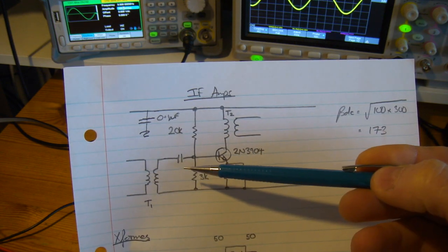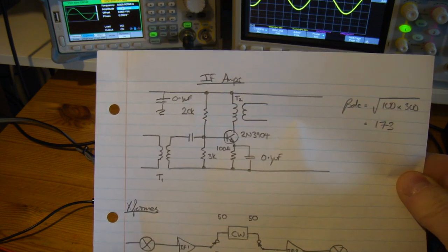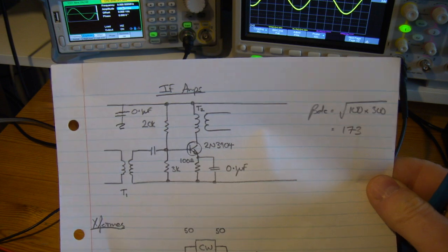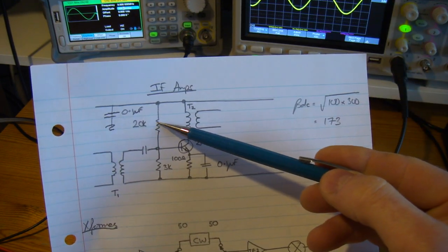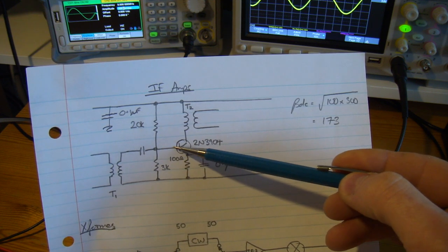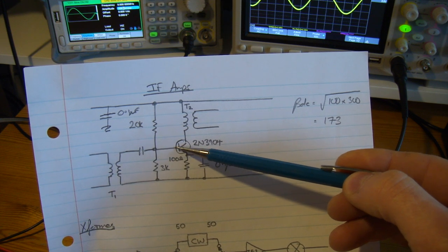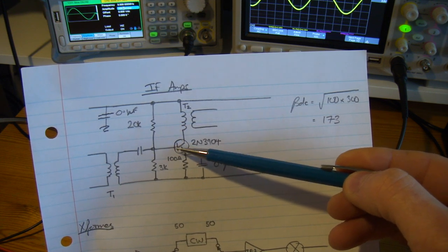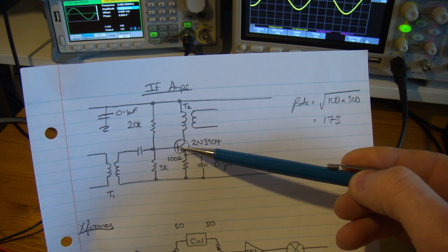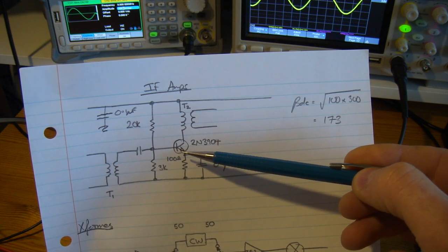On the input side I've used a nano VNA, so a slightly different approach than I have done in the past. In the past I have used R1 in parallel with R2 in parallel with whatever is here looking into the base of this transistor.